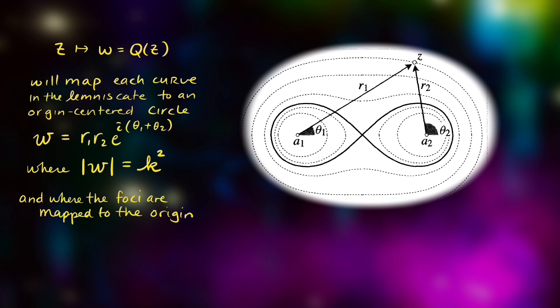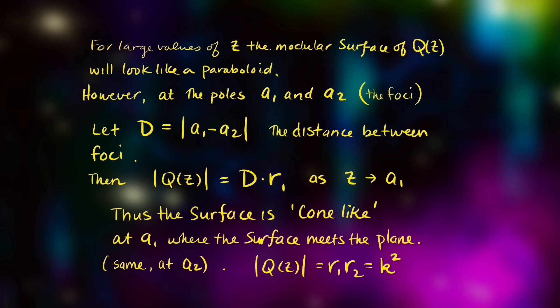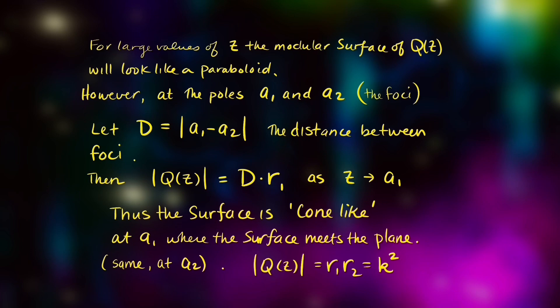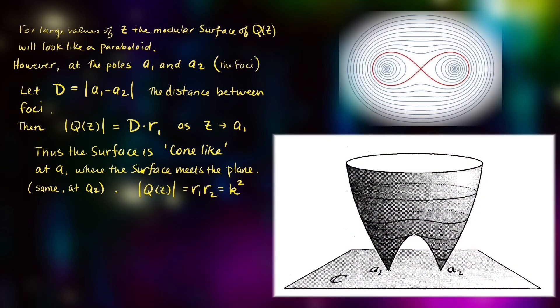If we call r_1 and r_2 the product of such, the distances k squared, we get the modular form, the distance above the complex plane to be given by k squared, and this surface is a cone-like surface when it's near the point a_1. And then as it moves forward or away from the complex plane, it behaves more like the paraboloid.